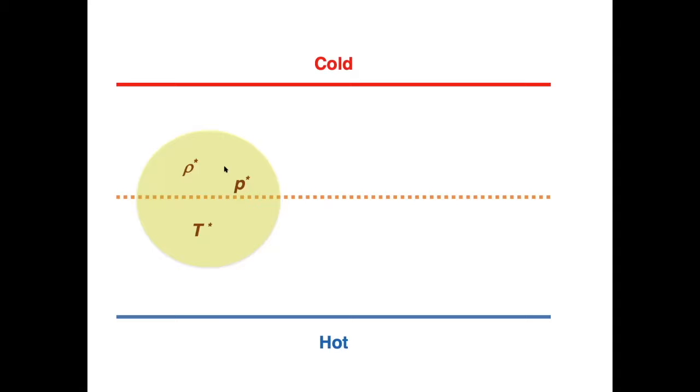Let's give subscripts to the quantities. You have the density, the pressure, and the temperature. In the bubble there are starred quantities, in the hot gas they don't have any superscript, and in the cold they're primed quantities.